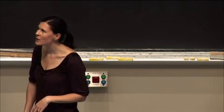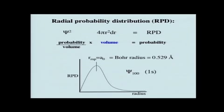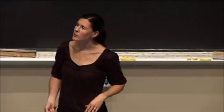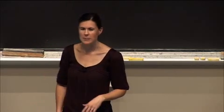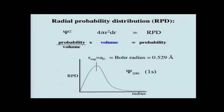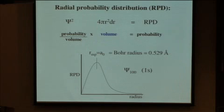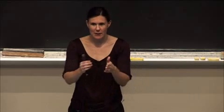We can look at the radial probability distribution formula for an s orbital, which is dealing with something spherically symmetrical. What we do to get an actual probability instead of a probability density is take the wave function squared — which is probability density — and multiply it by the volume of that very thin spherical shell at distance r. That volume is just the surface area 4πr² multiplied by the thickness dr.